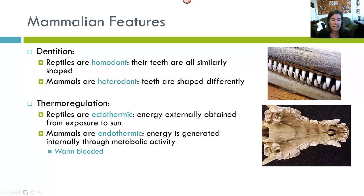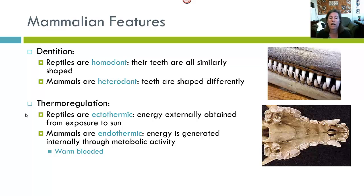Mammals are also very distinct from reptiles in the way they maintain body temperature. Mammals are capable of maintaining an internal constant body temperature — they are warm-blooded and referred to as endothermic, with energy generated internally through metabolic activity. Reptiles are ectothermic, obtaining their energy externally from exposure to the sun — that's why you see snakes lying out in the sun.